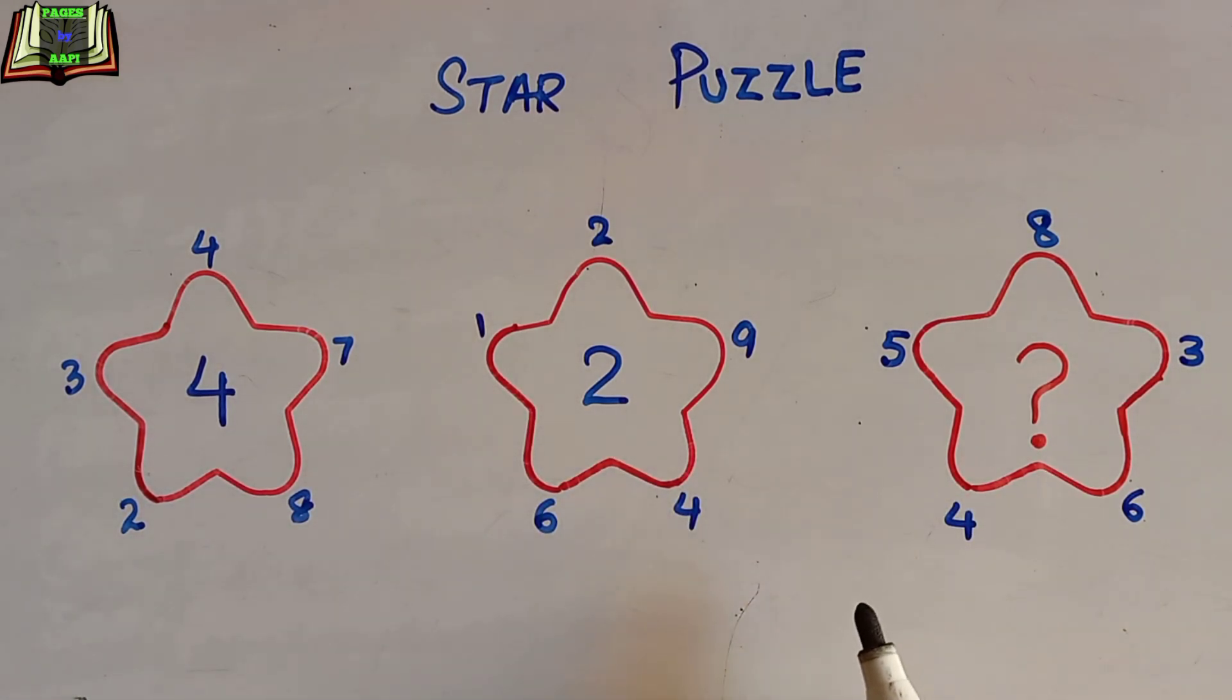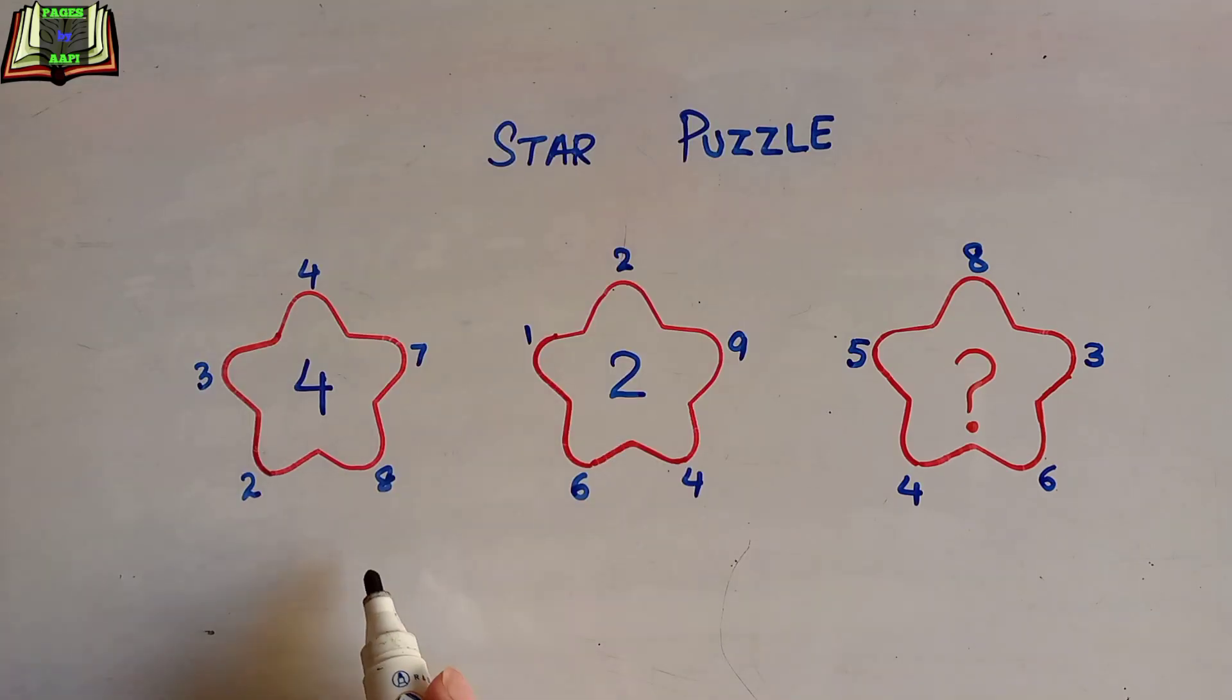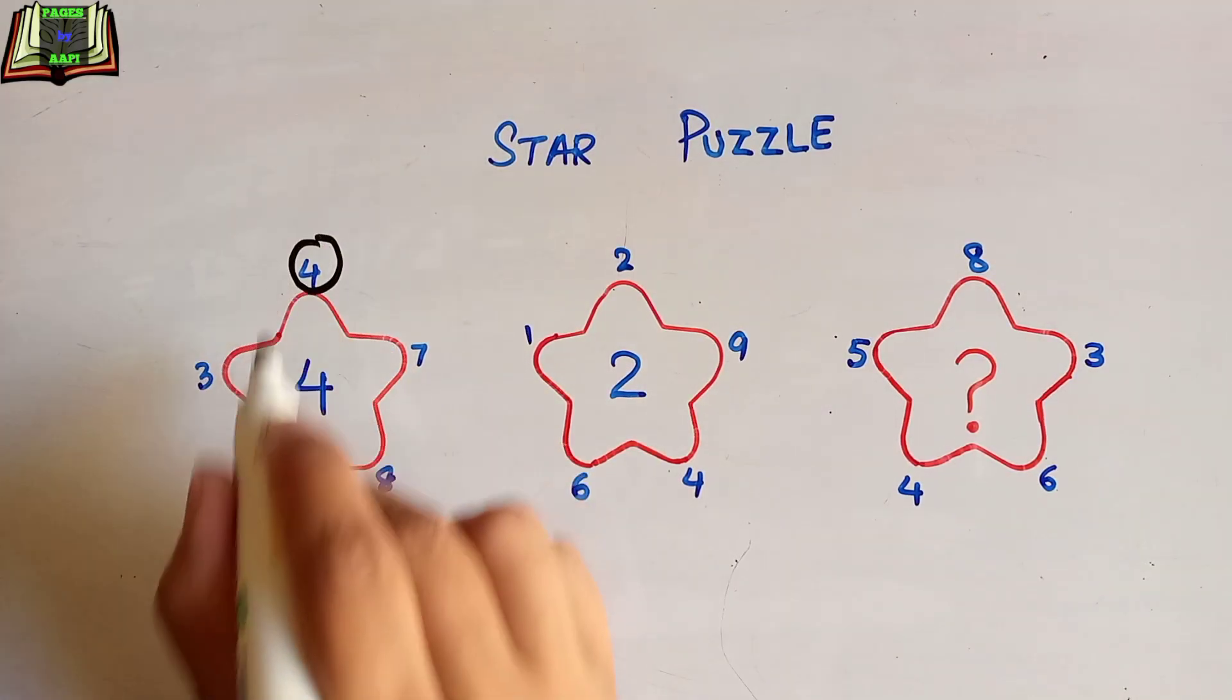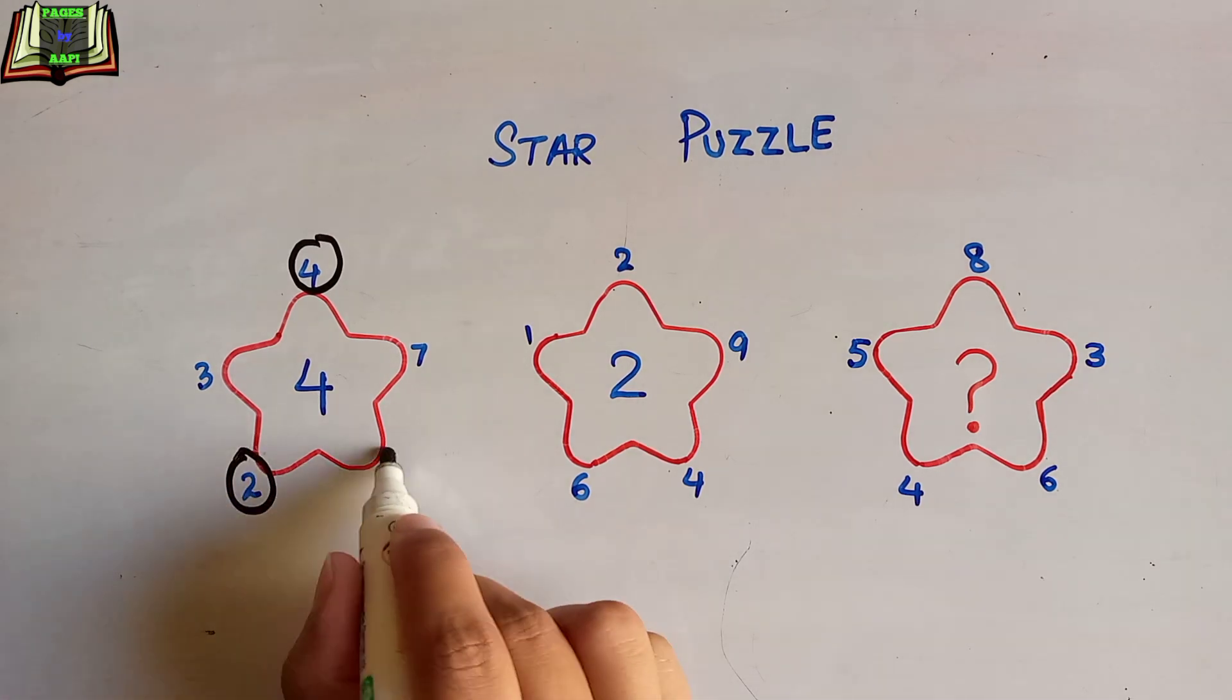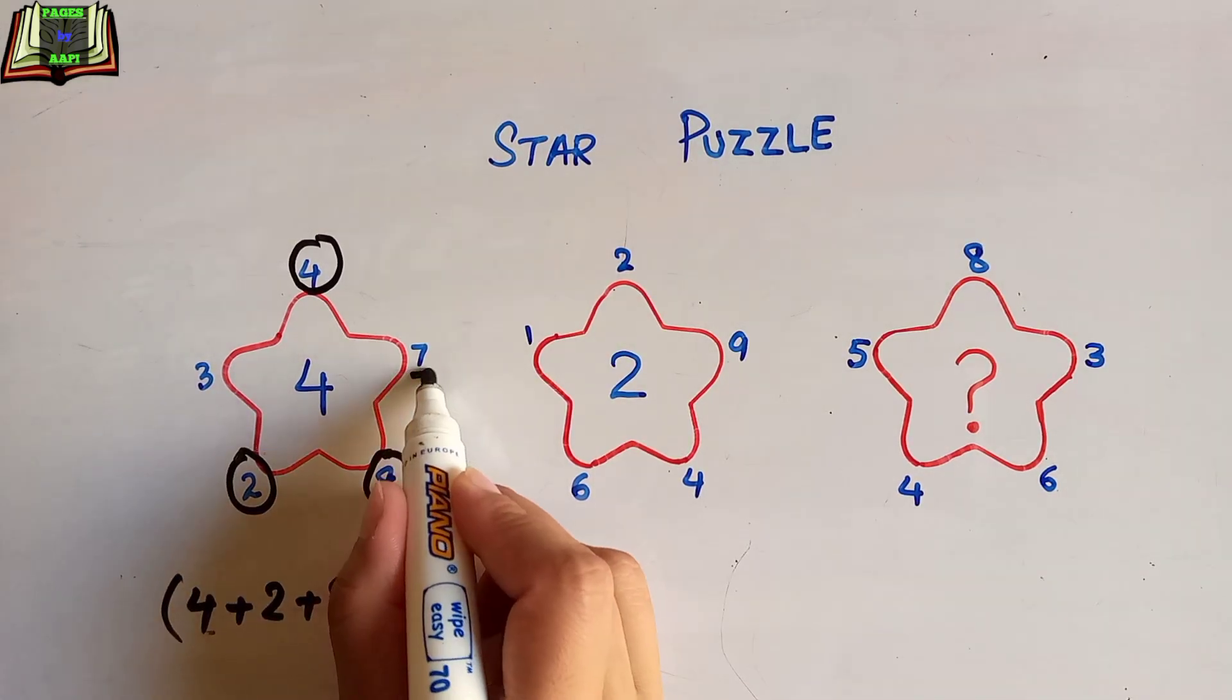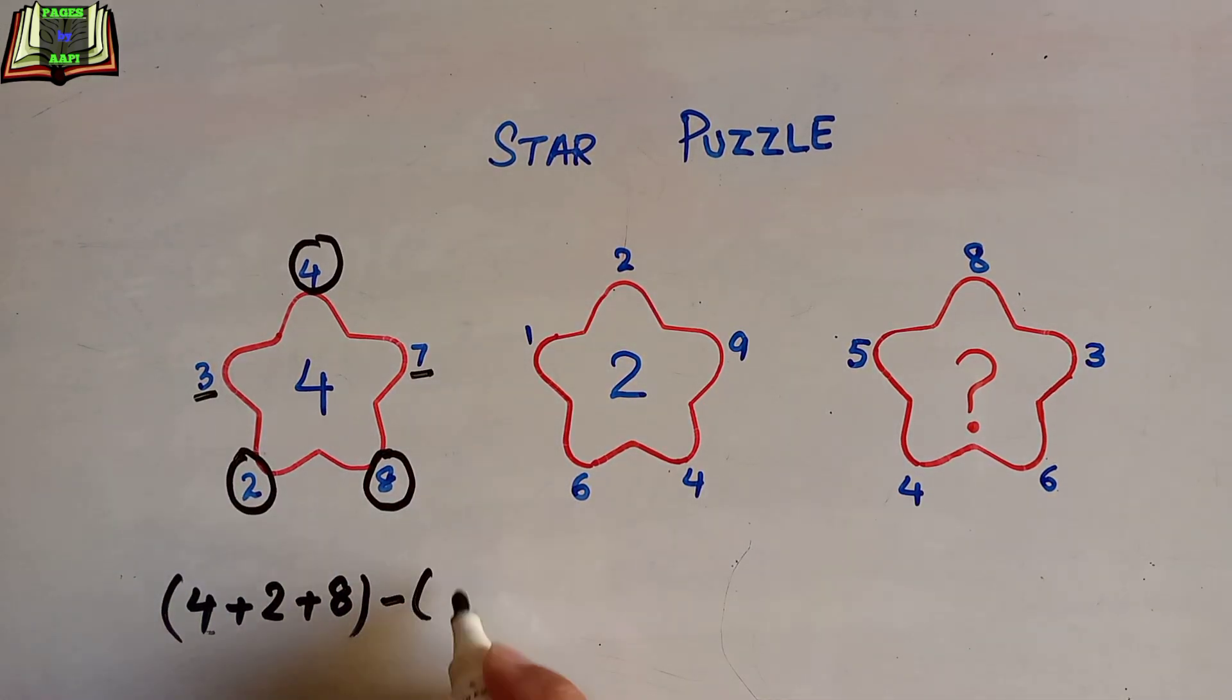In the same way, we are going to solve the unknown number. Let's solve the first star. Look at these three corner numbers: 4, 2, and 8. We are going to add these three numbers, 4 plus 2 plus 8, then use a minus sign, and we will take these two numbers and add them: 3 plus 7.